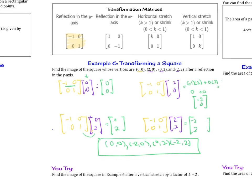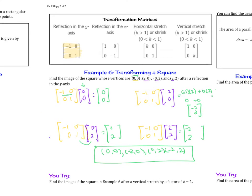Now find the image of the square with these vertices after a vertical stretch by a factor of 2. So vertical stretch by a factor of 2. You are going to be using this one here, and that k value is going to be 2.